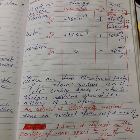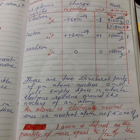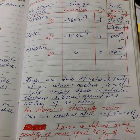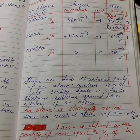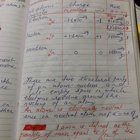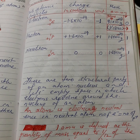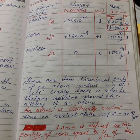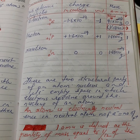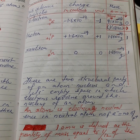Electrons are negatively charged, protons are positively charged, and neutrons are neutral. Neutrons and protons are present in the nucleus and collectively they are known as nucleons. Subatomic particles present in the nucleus are known as nucleons, so protons and neutrons are called nucleons.